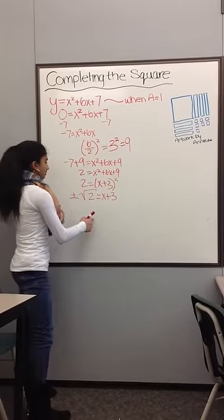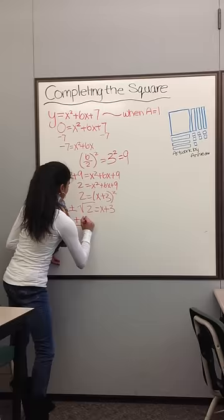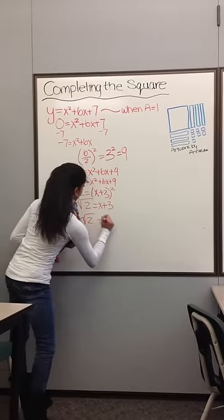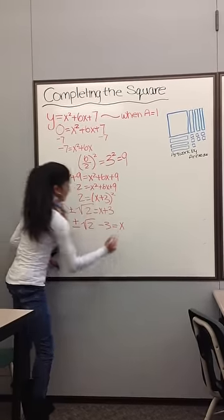You subtract 3 from both sides to get plus or minus the square root of 2 minus 3 equals x.